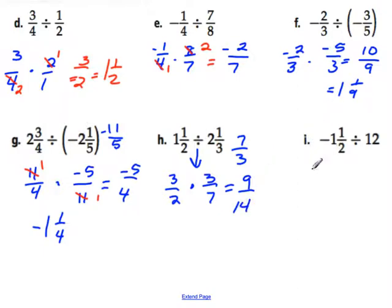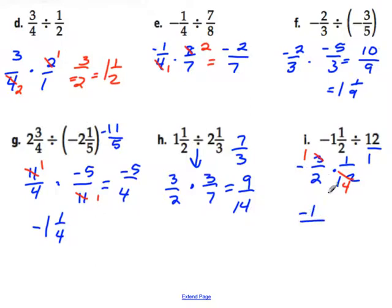Letter I: this one is negative 3 over 2 multiplied by — the whole number 12 written as a fraction is 12 over 1, so the reciprocal is 1 over 12. We can reduce: 3 goes into 3 once and 3 goes into 12 four times. Multiply across: negative 1 over 2 times 4 is negative 1 eighth.